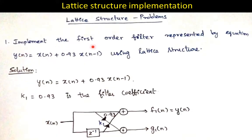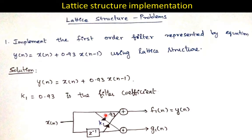Let us see a problem. Implement the first order filter represented by the given equation using lattice structure. Write the equation as it is; since this is a first order filter you have only one filter coefficient, which is directly assigned to k1. Draw the filter structure, and the crisscross multiplier is marked with the given value 0.93. That is how you implement a first order filter — very simple.